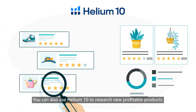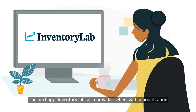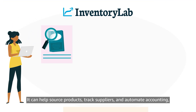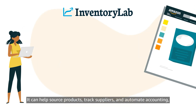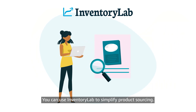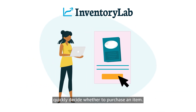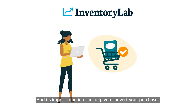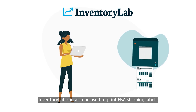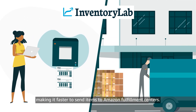You can also use Helium 10 to research new profitable products. The next app, Inventory Lab, also provides sellers with a broad range of features and functionality. It can help source products, track suppliers, and automate accounting, in addition to providing listing functionality. You can use Inventory Lab to simplify product sourcing. Its sales history and margin presets can help you quickly decide whether to purchase an item, and its import function can help you convert your purchases into Amazon inventory. Inventory Lab can also be used to print FBA shipping labels during the listing process, making it faster to send items to Amazon fulfillment centers.